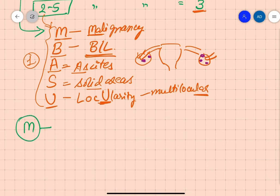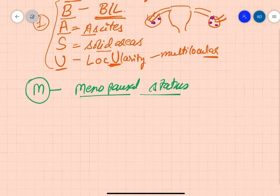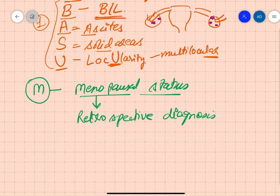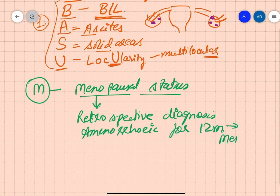M in the RMI formula stands for menopausal status. To understand this, you first need to know the definition of menopause. Menopause is a retrospective diagnosis — if somebody has been amenorrhoeic for 12 months, we call it menopause. There is also another definition which is easily forgotten.